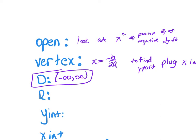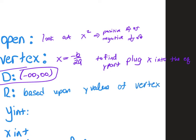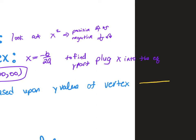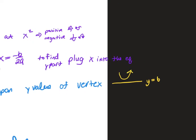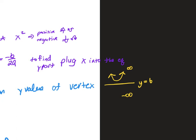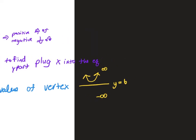When we talk about range, it's going to be based upon the y value of your vertex. Say the y part of my vertex is y = 6. If the parabola is positive, it opens upward — so where does it exist? From 6 to infinity. That would be your range. If I had a negative parabola and it was y = 6, the range would be from negative infinity to 6. That's how you read the range just by looking at it.